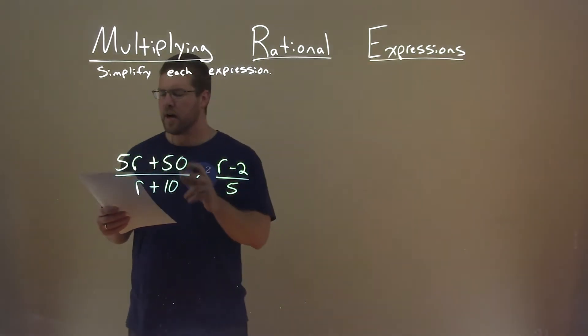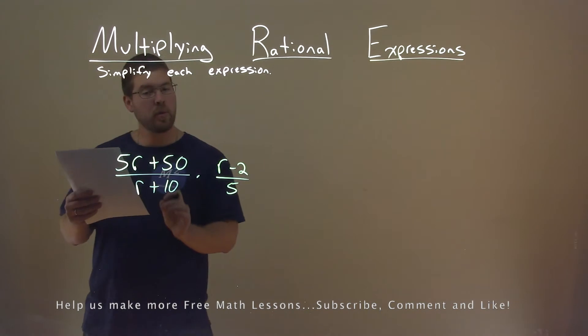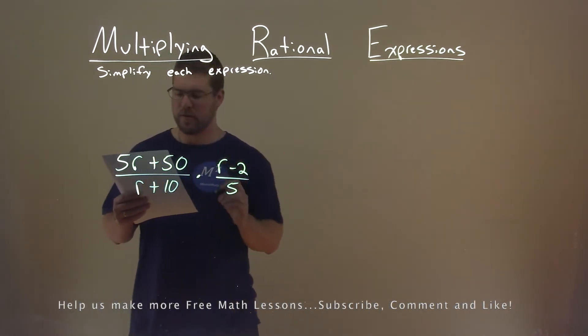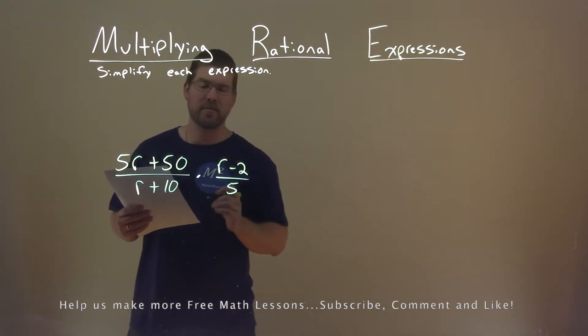We're given this problem right here: 5r plus 50 divided by r plus 10 times r minus 2 divided by 5, and we want to simplify this expression.